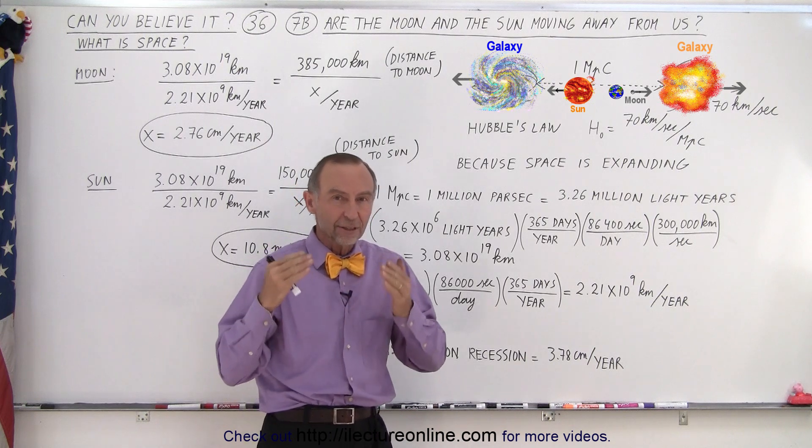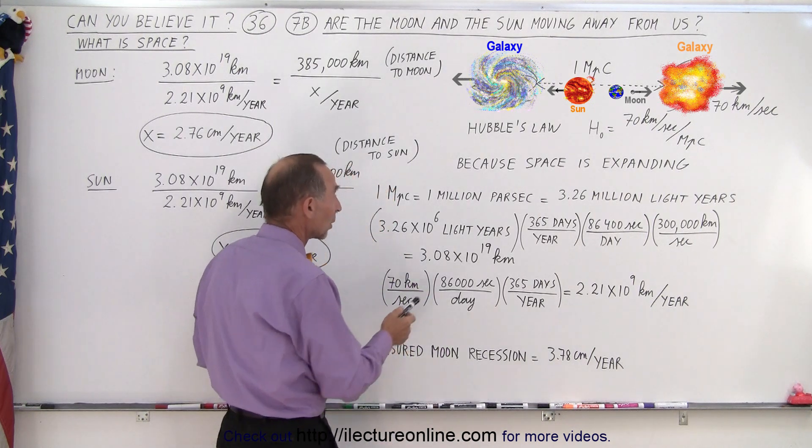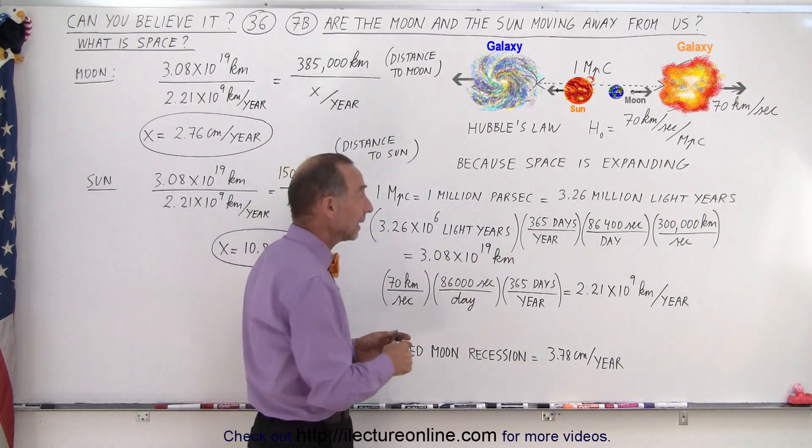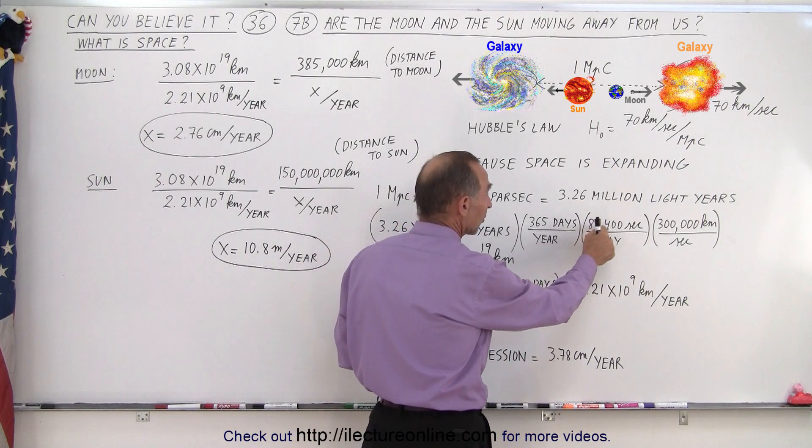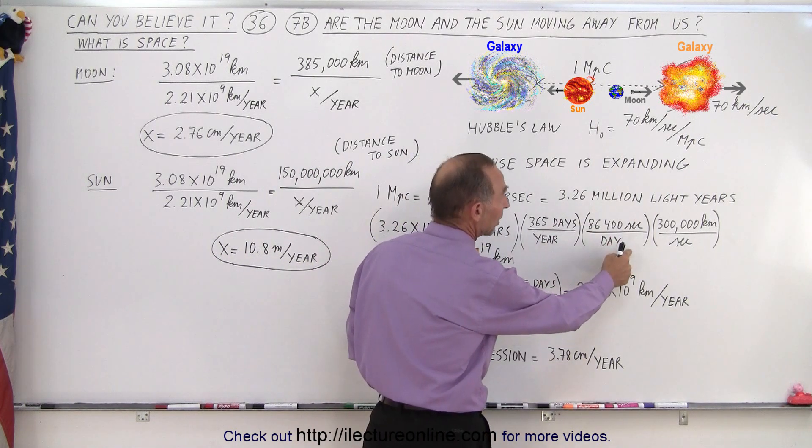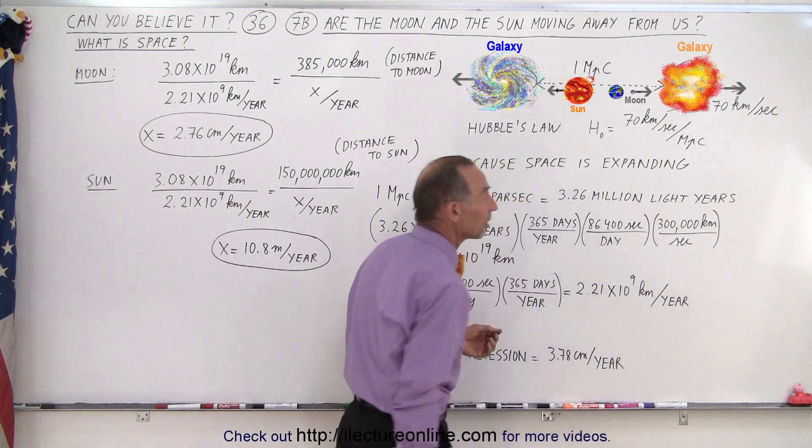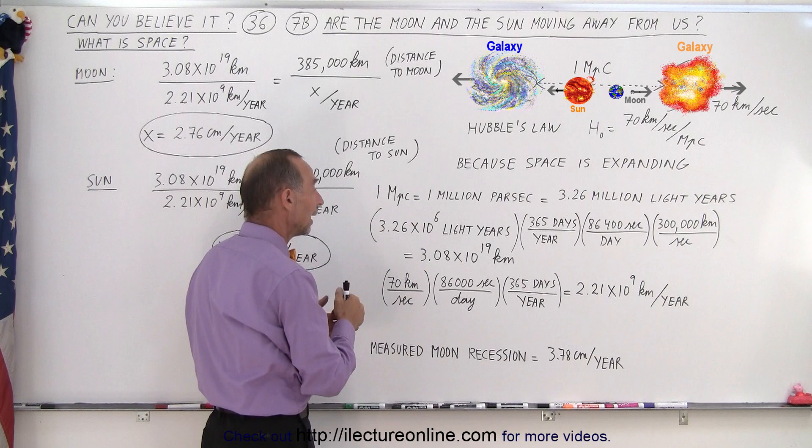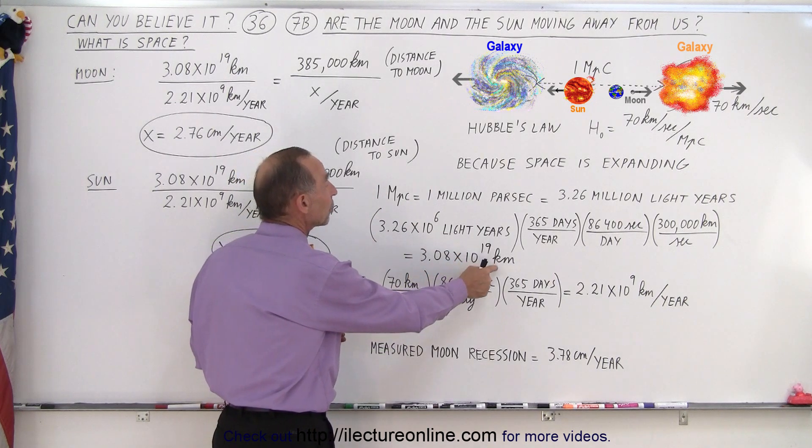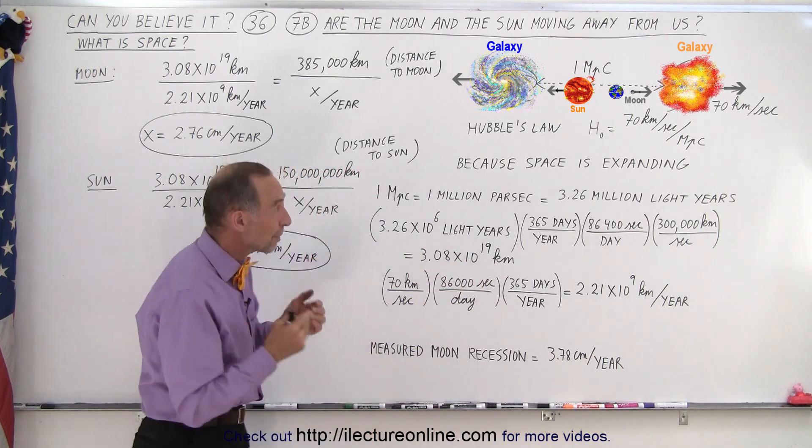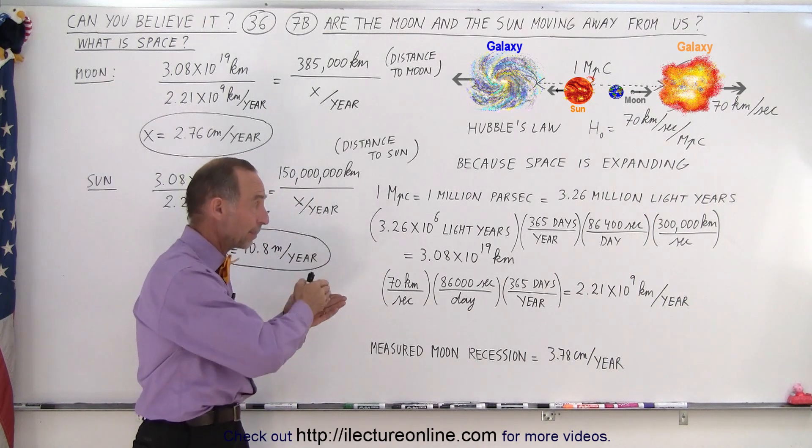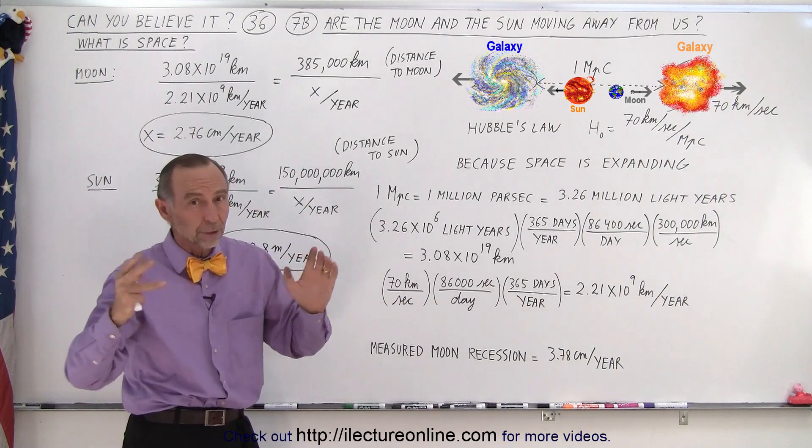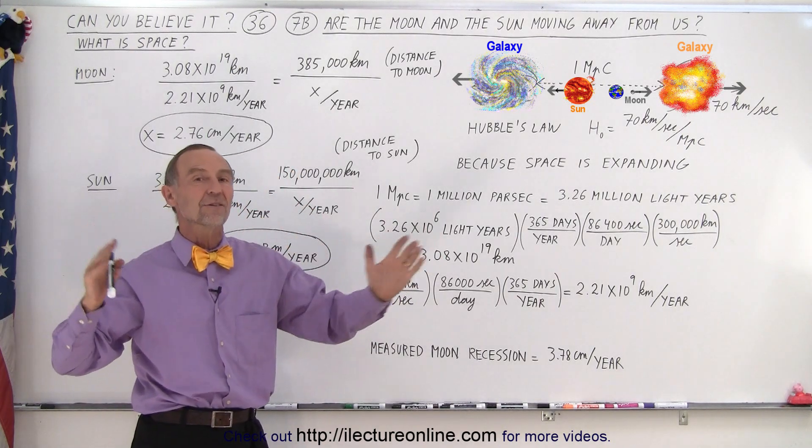At that speed, how far can light travel in a single year? Well, we take a light year and multiply it times 365 days per year, and in one day there are 86,400 seconds per day, and then in each second light travels 300,000 kilometers per second. So multiply all that times 3.26 million and you get 3.08 times 10 to the 19 kilometers. So 3.26 million light years, a megaparsec, is equal to about 3 times 10 to the 19 kilometers. It's a phenomenal number, a gigantic distance.